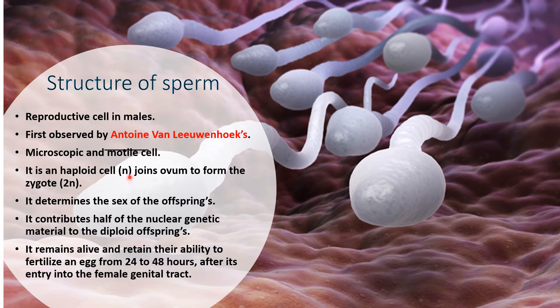Sperm is in a haploid condition because it contains only one set of chromosomes. Half of the chromosomes enter the sperms because of the meiotic type of divisions. This haploid cell joins with another haploid cell formed in the human female — that is the ovum — to form the zygote. The zygote is a diploid cell which contains two sets of chromosomes, one from the male gamete and one from the female gamete.